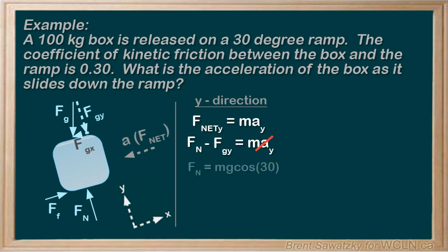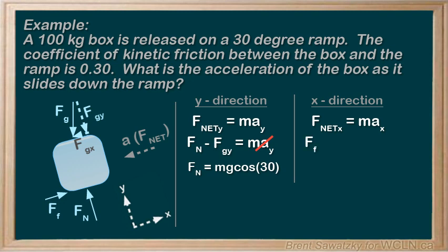So, we end up with Fn equals Mg cos 30. Let's switch to the X direction. Again, Fnet,X equals M AX. The forces in the X direction include the force of friction going up the ramp, positive, and Fg,X going down the ramp, negative. And on the right, we are expecting an acceleration in the X direction. So we'll leave the M AX in place.